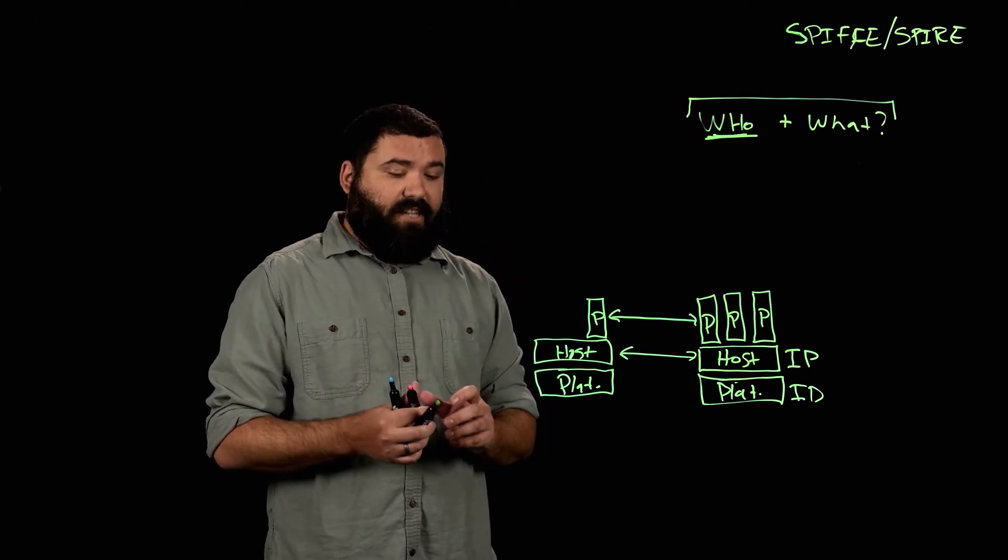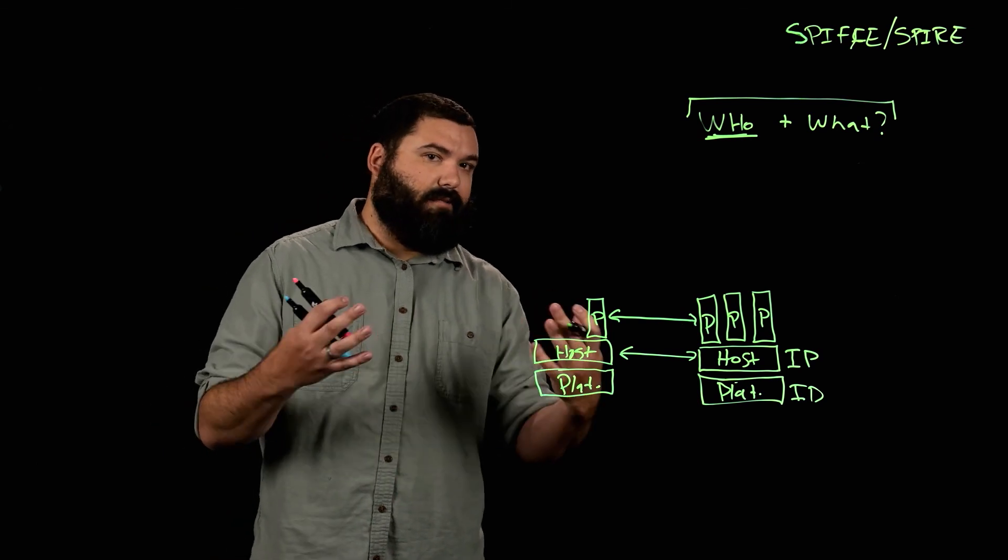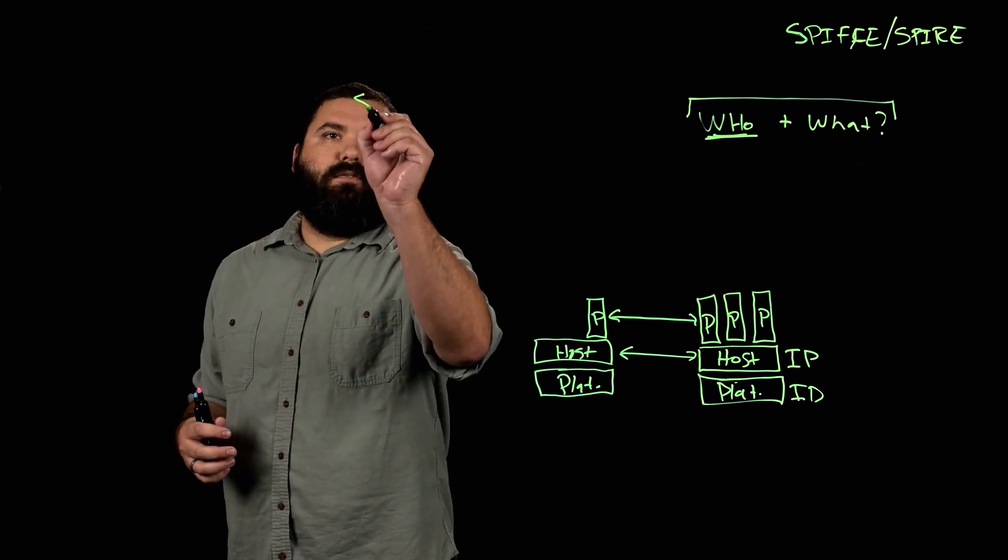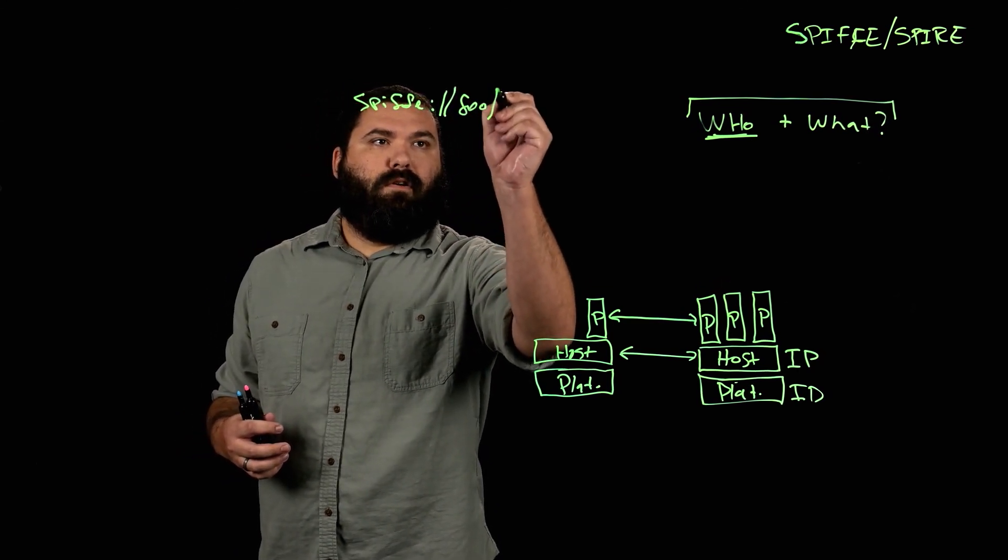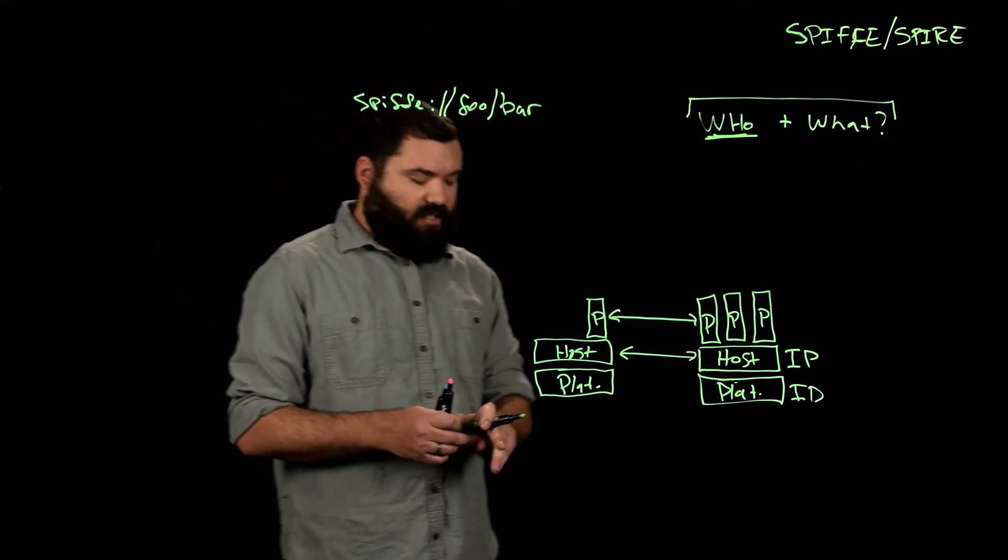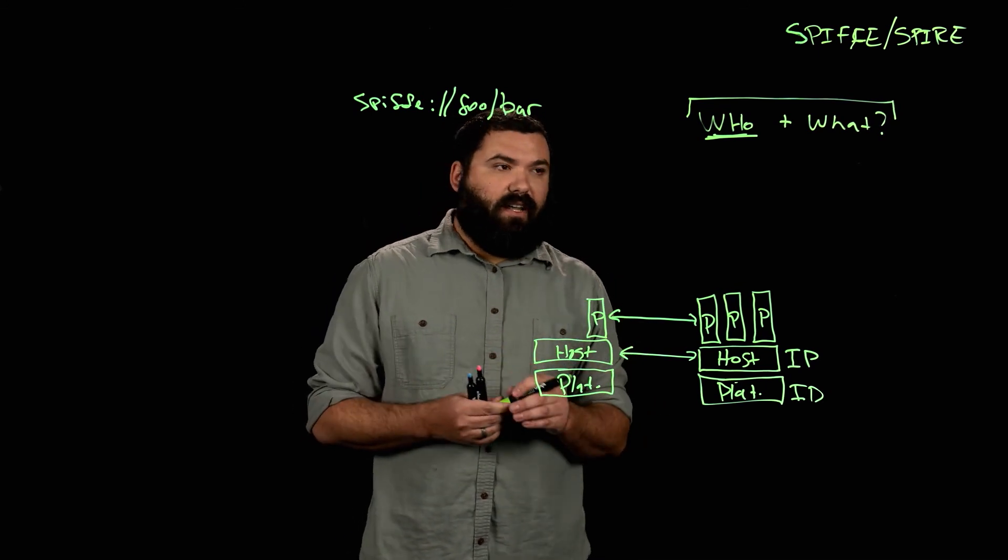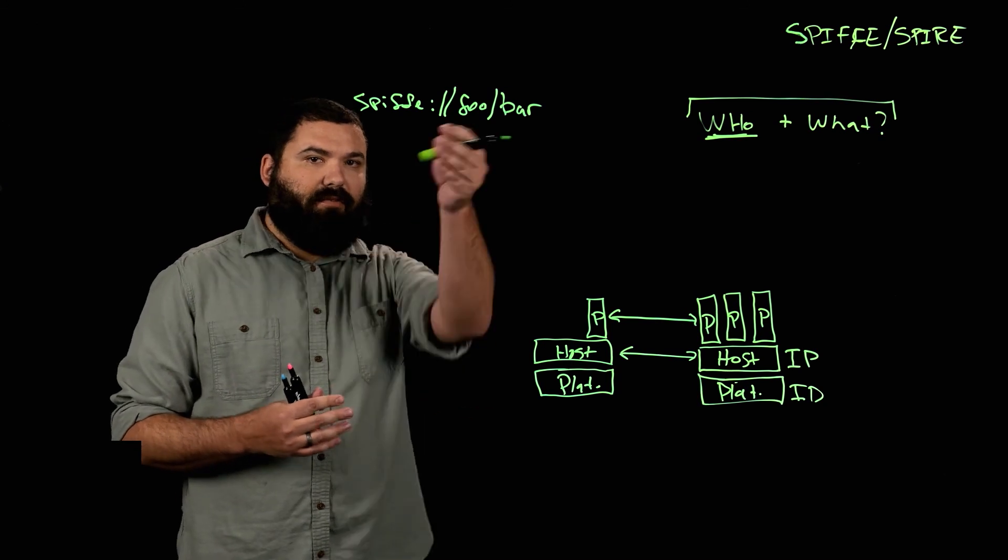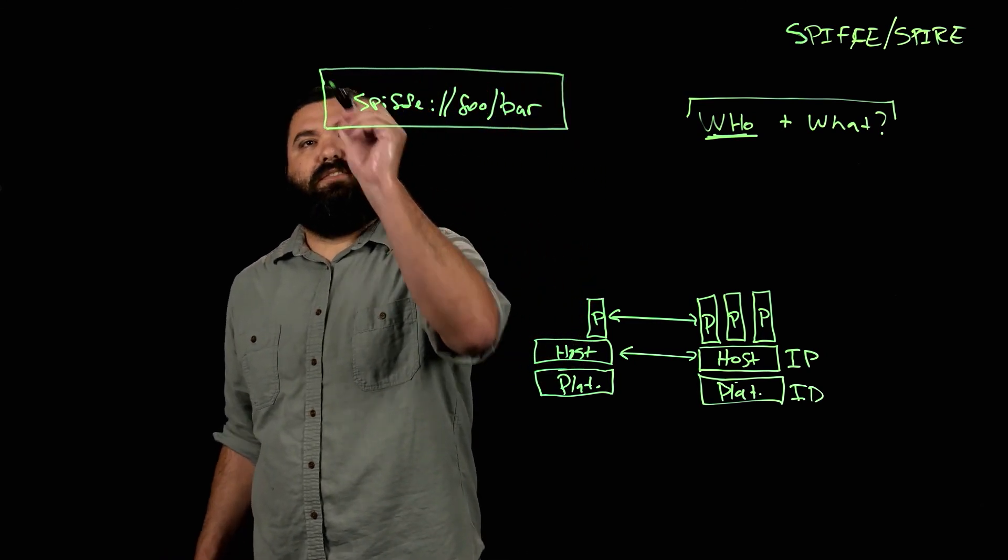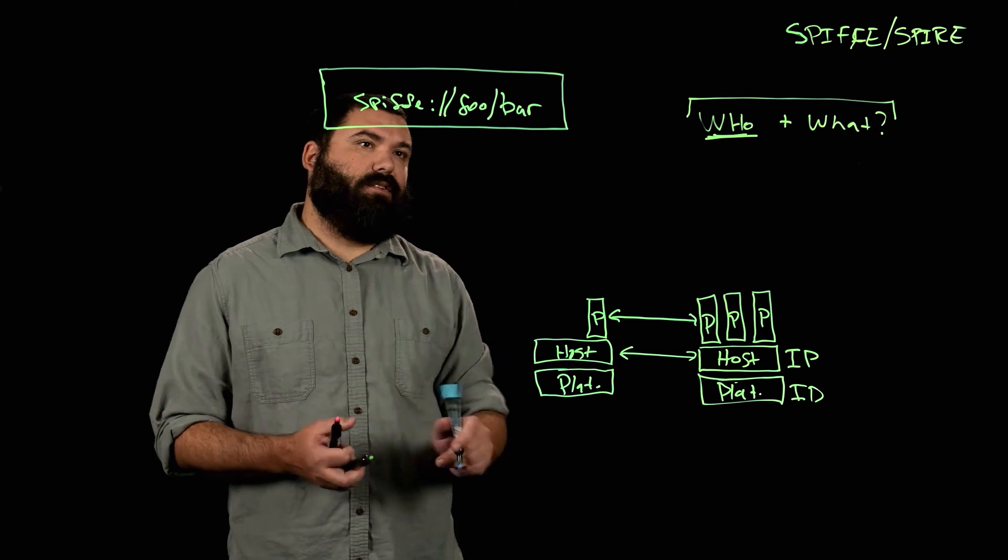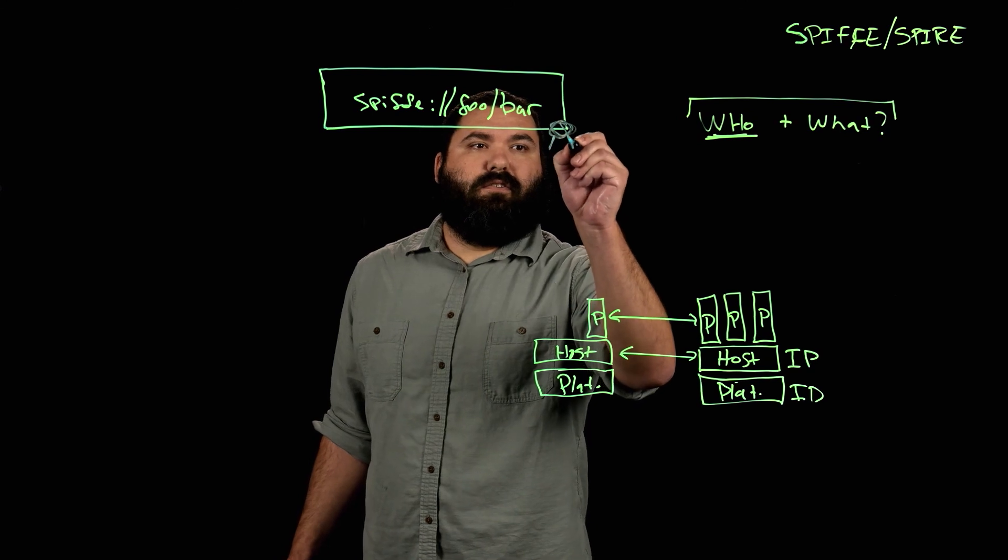There are three key challenges in solving this workload identity problem. The first is an identifier. We need some way to reference the workload or the service. In Spiffe, we have what's called a Spiffe ID to do this. One way to think about this is it's just like a username for workloads. The second thing that we need is a way to prove this identity to someone else. And the way that we do this is with what we call an SVID, which stands for a Spiffe Verifiable Identity Document. This SVID is always signed by an authority to prove its authenticity.